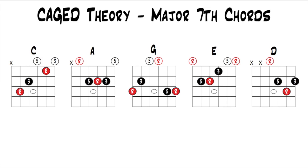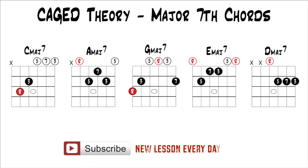Here are the basic major triads for the cage chords. We can turn all of these open chords into major seventh chords. So you have C major 7, A major 7, G major 7, E major 7, and D major 7. These are all really common open position major seventh chords. If you don't know them, they're definitely worth learning because they're very useful and used all the time.